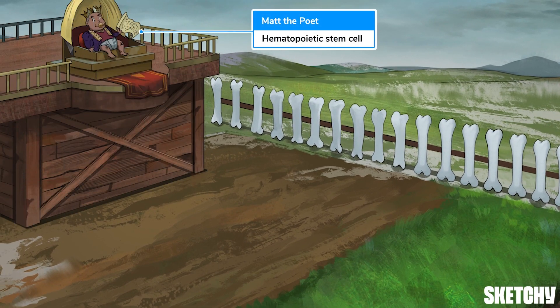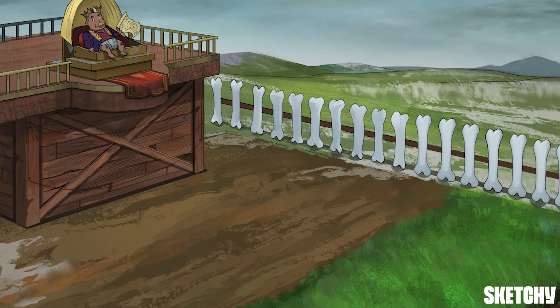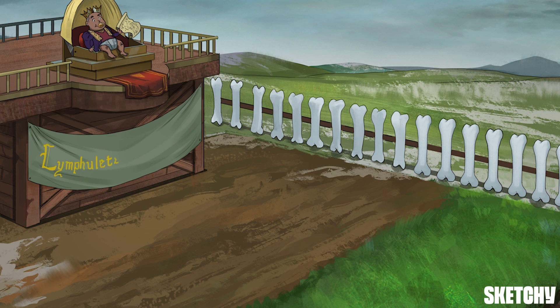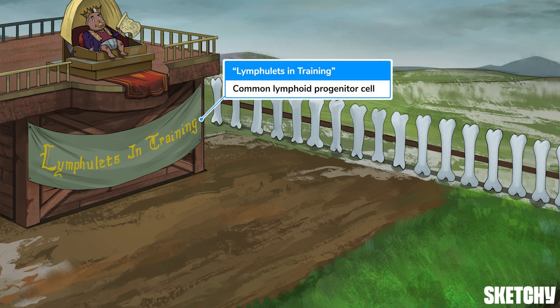Starting from the top, we'll introduce our King Matt the Poet, who is there to remind you that B-cells arise from hematopoietic stem cells. Those hematopoietic stem cells become common lymphoid progenitor cells before eventually transforming into either B-cells, T-cells, or natural killer cells. If you've seen our immune lineages sketch, this is the lymphulets side, so we'll add a 'lymphulets in training' banner prominently displayed beneath his majesty.